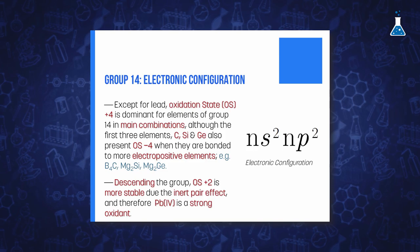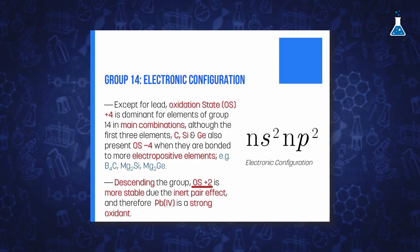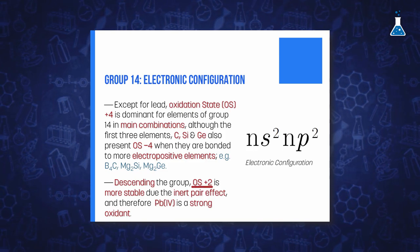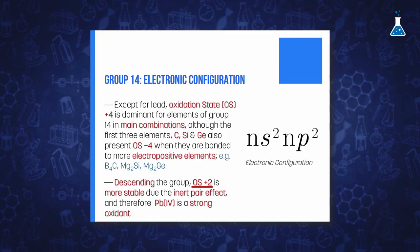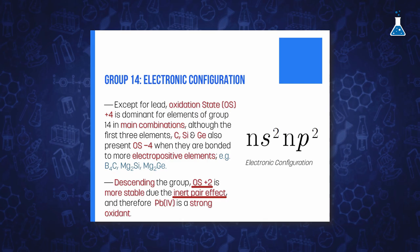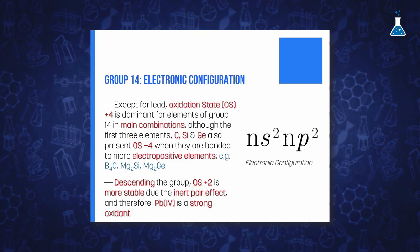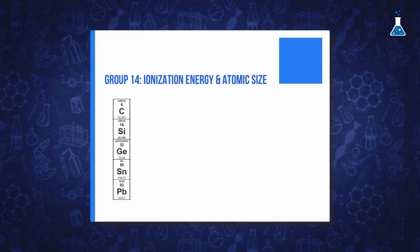When we descend in the group, we find that the oxidation state plus 2 is the most stable for tin and lead in ionic compounds, as a result of the inert pair effect in both elements, whilst for silicon it is not really frequent. Therefore, combinations of lead in oxidation state 4 are typically strong oxidants and are easily reduced to lead 2.